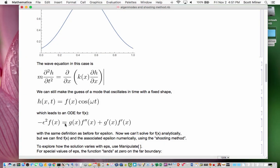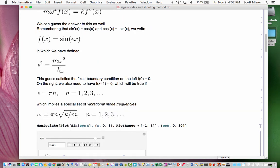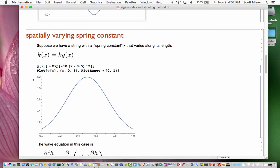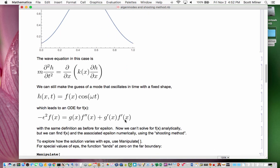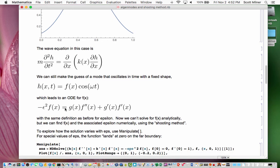With the same definition as before for epsilon, that is, epsilon squared is m omega squared over k. Now this equation with that function g that we defined up here, which is telling the way that the spring constant varies, is a little too complicated to solve for f analytically. But we can find solutions of f for any given epsilon numerically, and we can adjust the value of epsilon